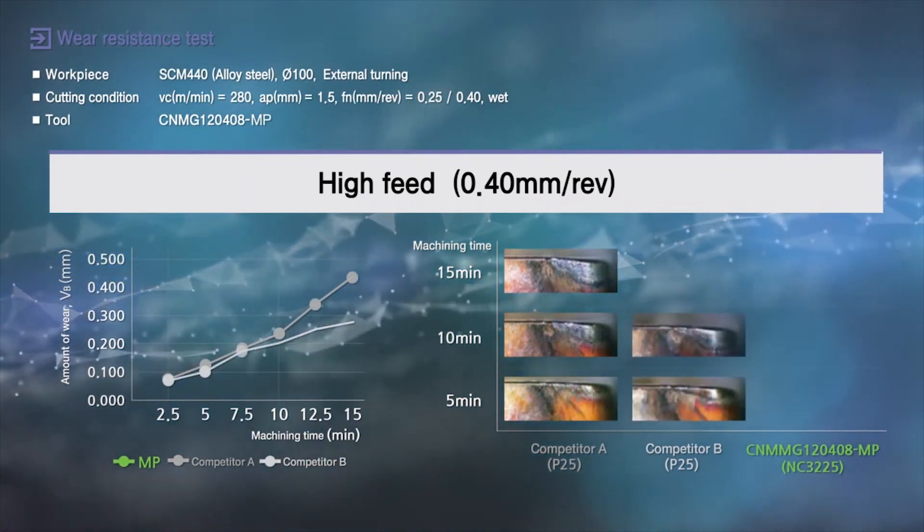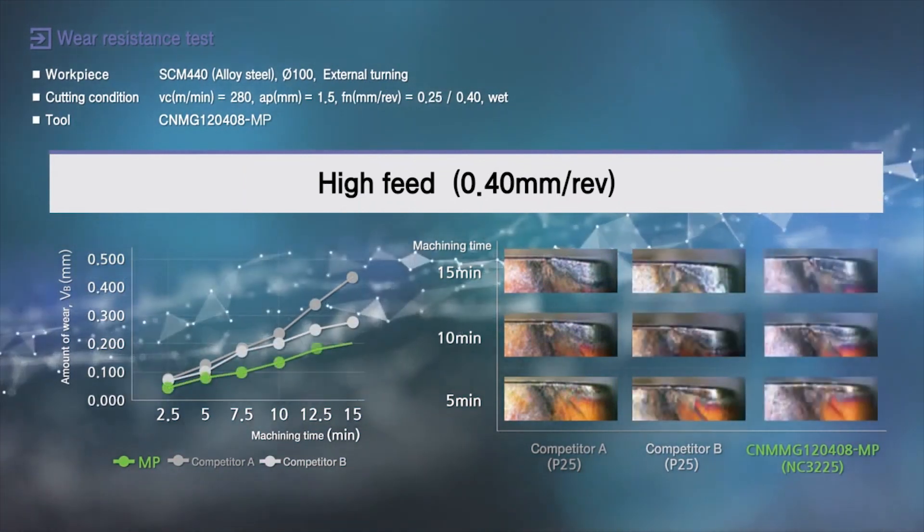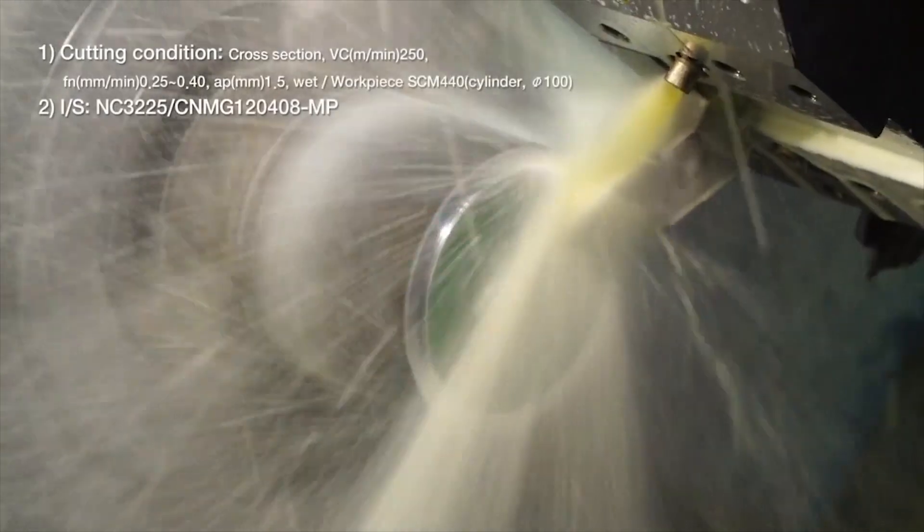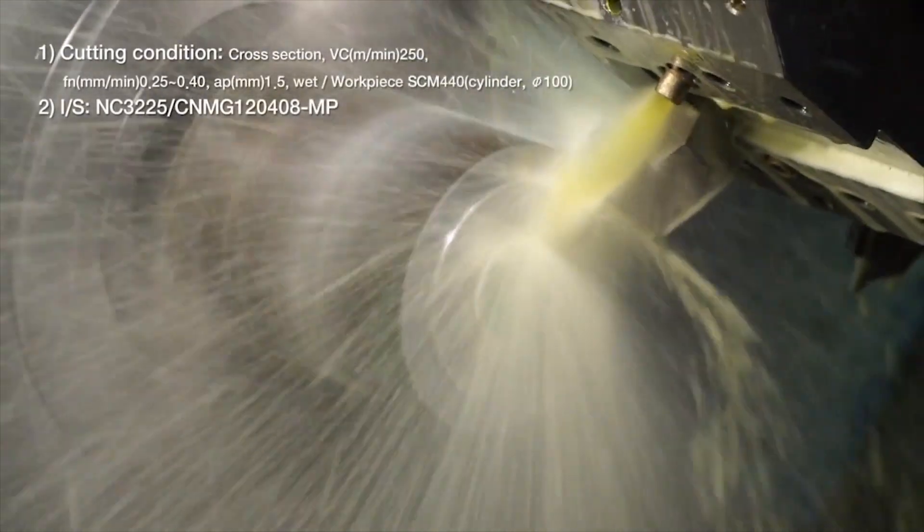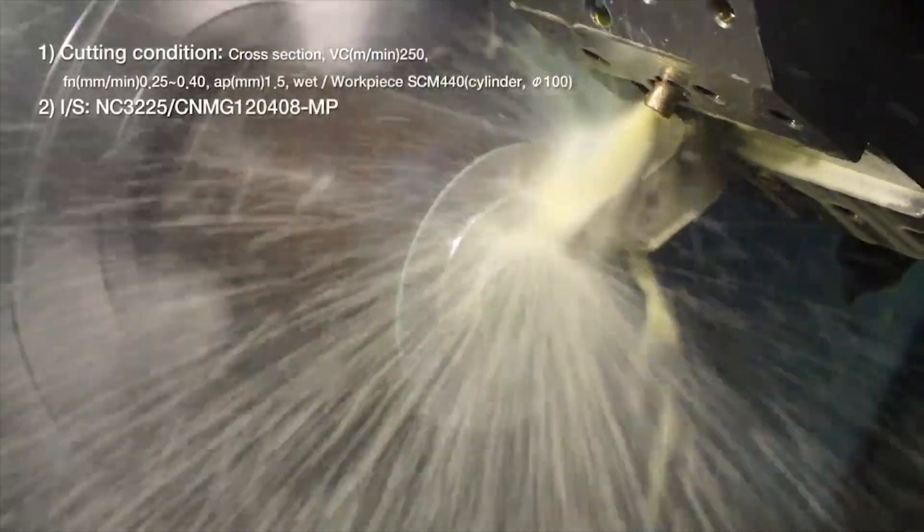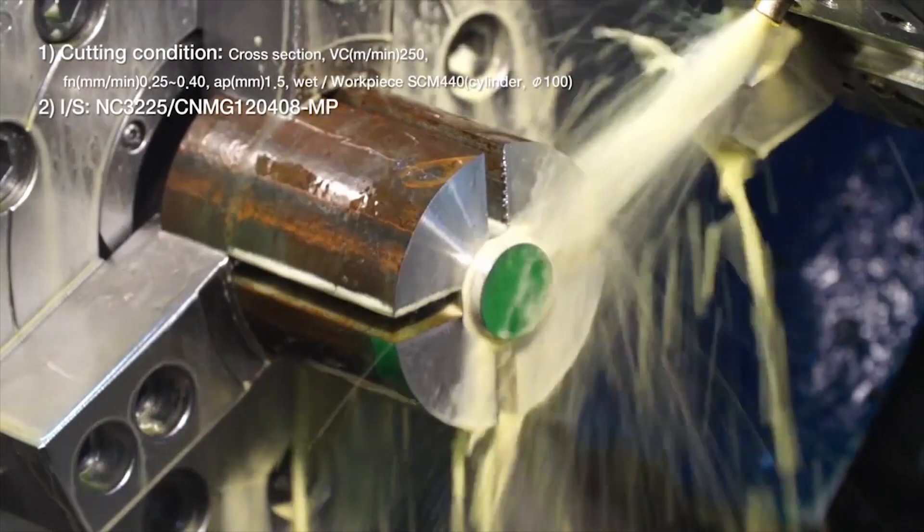While turning four-point groove parts in medium or cold-drawn alloy steel, the medium turning breaker MP in grade NC3225 showed excellent chipping resistance and retained coating and adhered hardness time and time again.